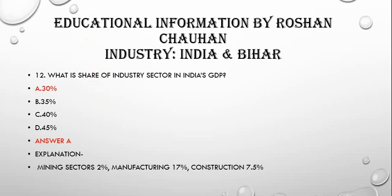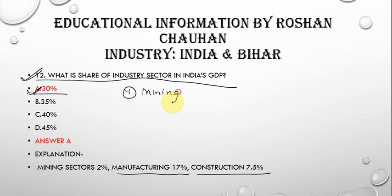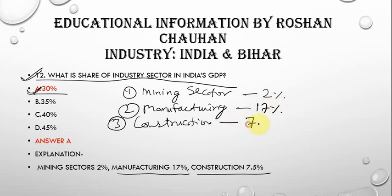The next question is: what is the share of the industry sector in India's GDP? The correct answer is 30%. The industry sector has three parts: mining sector at 2%, manufacturing sector at 17%, and construction sector at 7.5%. These three together constitute the industry sector.